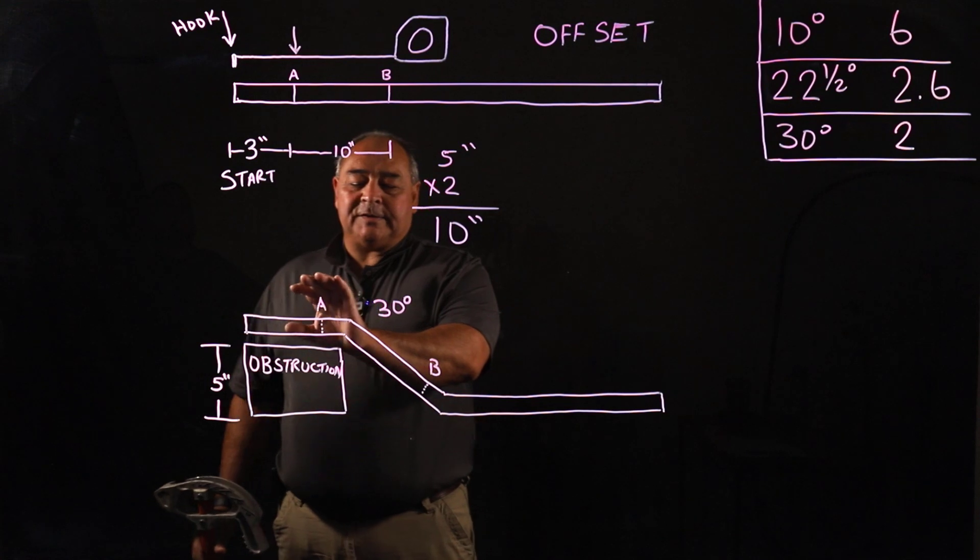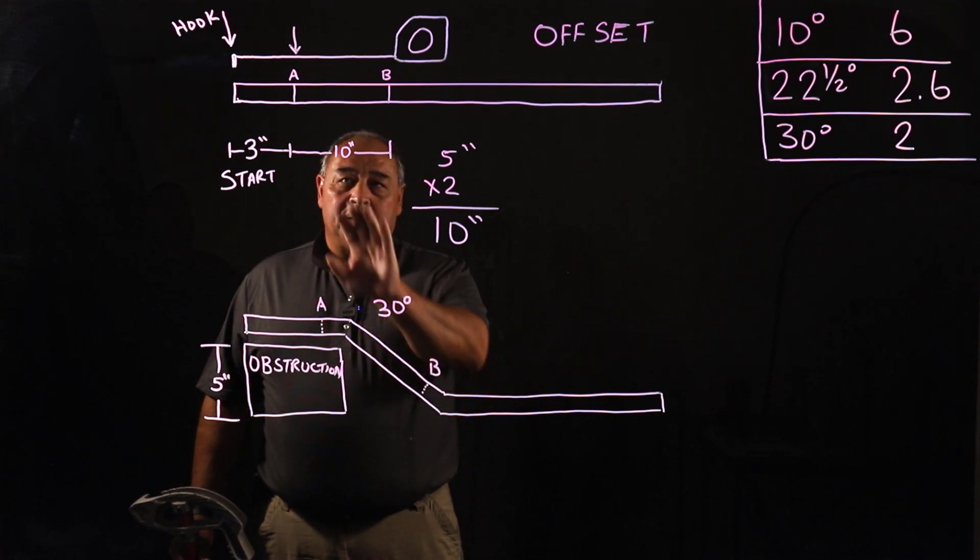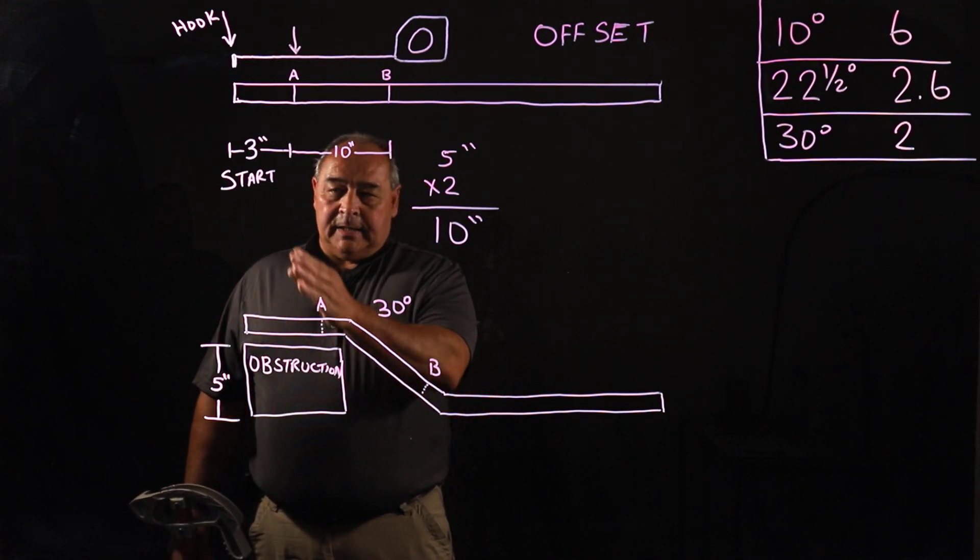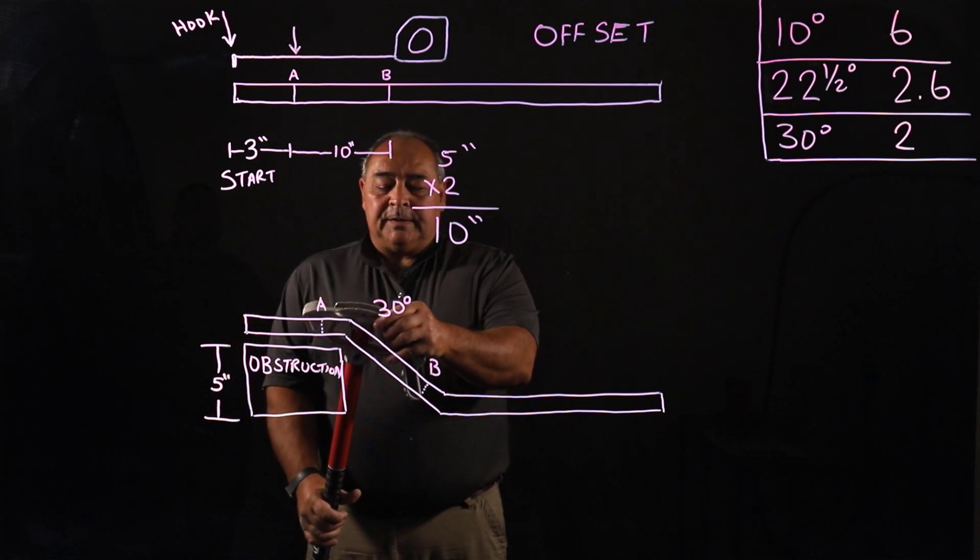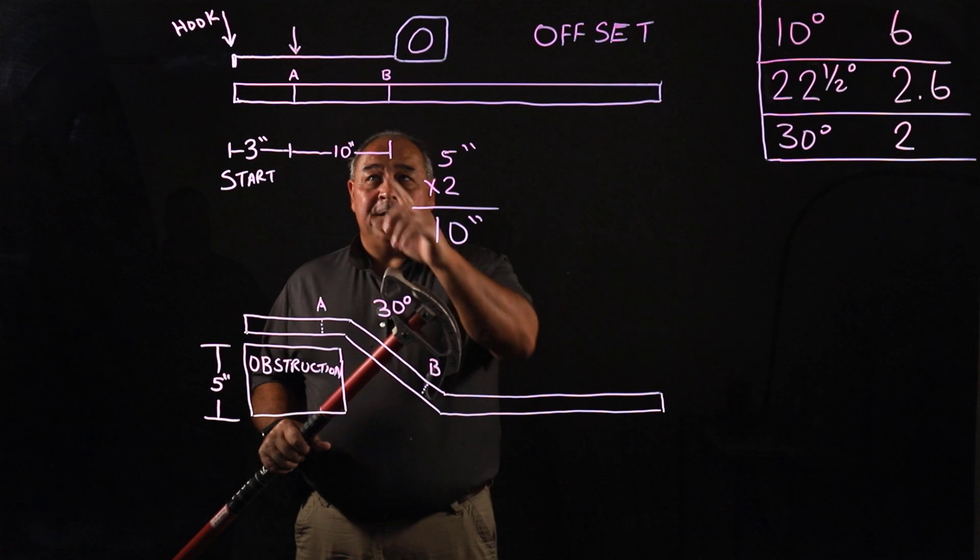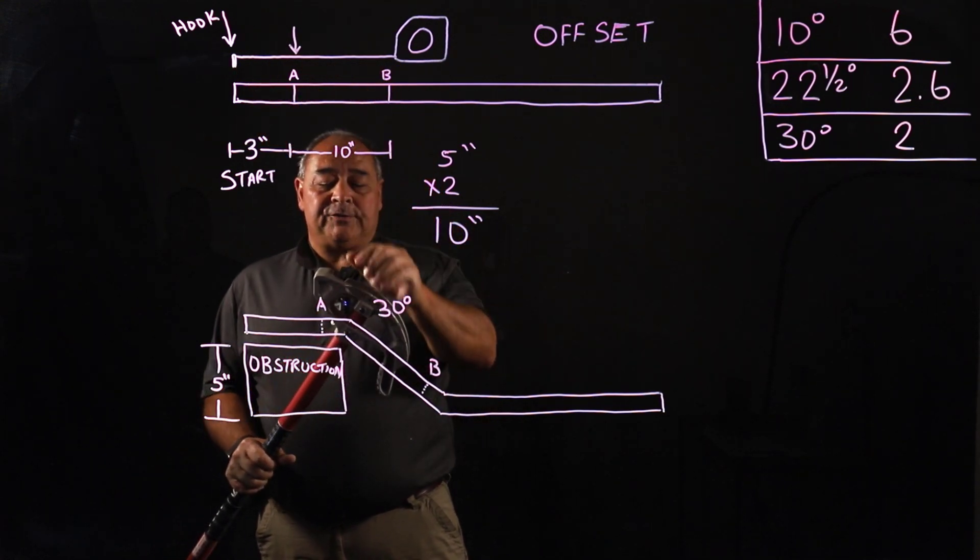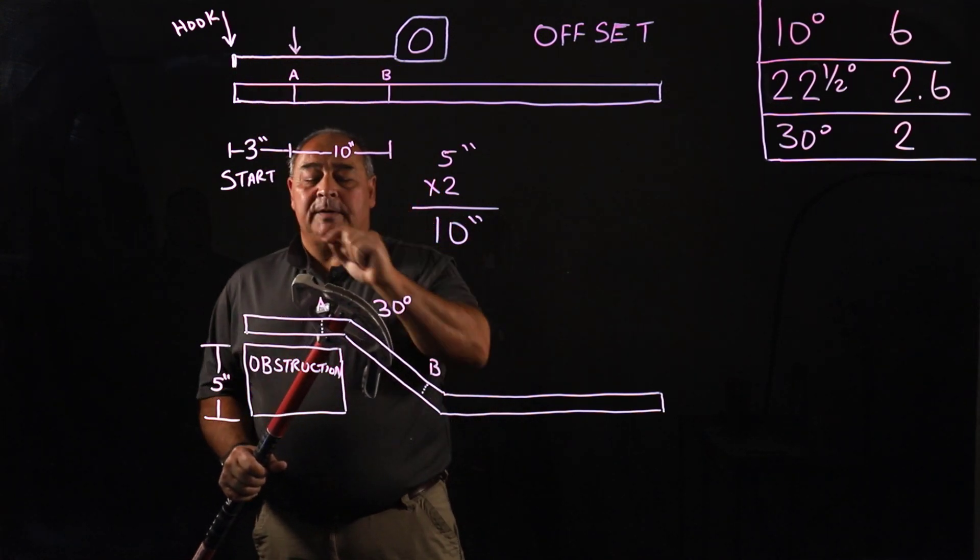And to bend this, once we established our A and B marks that are 10 inches apart, again I suggest it starting at three, we'd bend the first bend with our hook, the same orientation as the way we measured. The hook of the bender, the hook of the tape measure. You put this on the arrow on the bender.